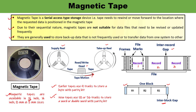The storage capacity of tape varies. A 10-inch diameter reel of tape that is 2400 feet long can store 180 million characters. Storage capacity depends on the length of the tape reel. To improve efficiency, a number of records can be grouped into a block, and each block is recorded as a single unit on the tape.